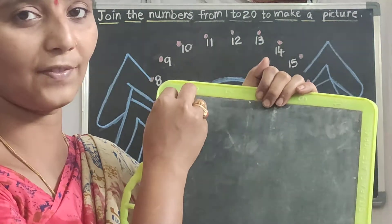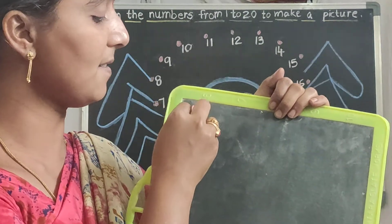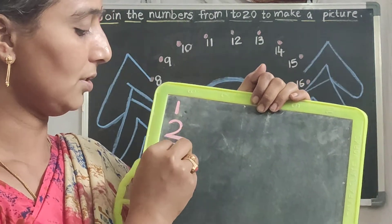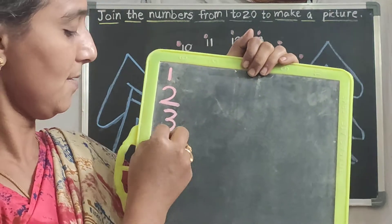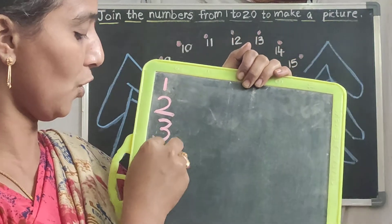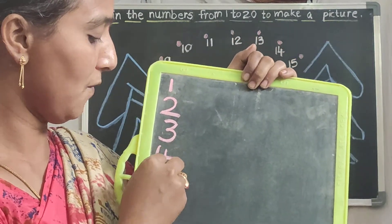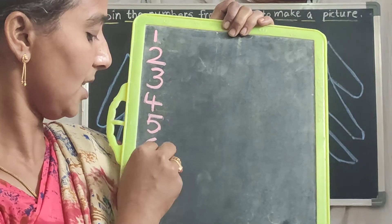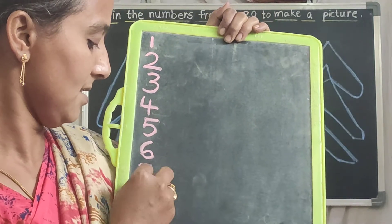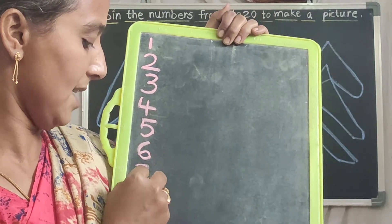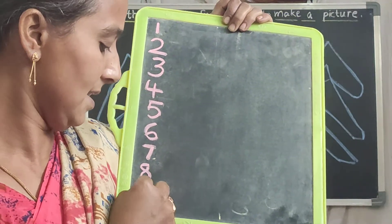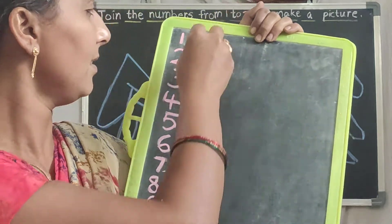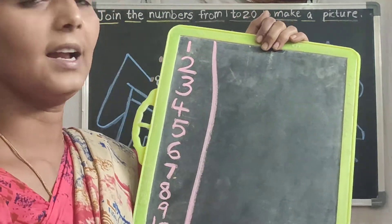Start from 1 children. 1, 2, 3, 4, 5, 6, 7, 8, 9, 10. Then draw the line.